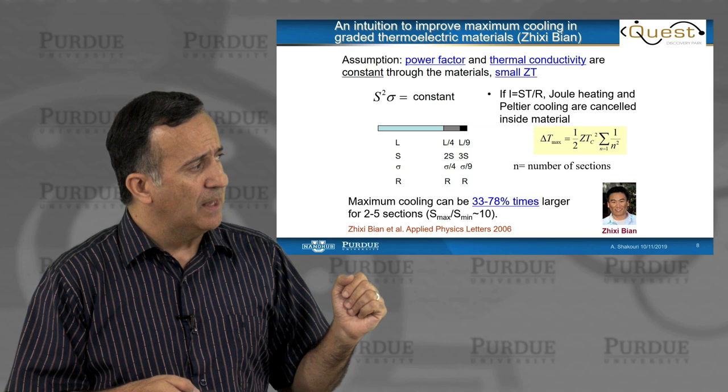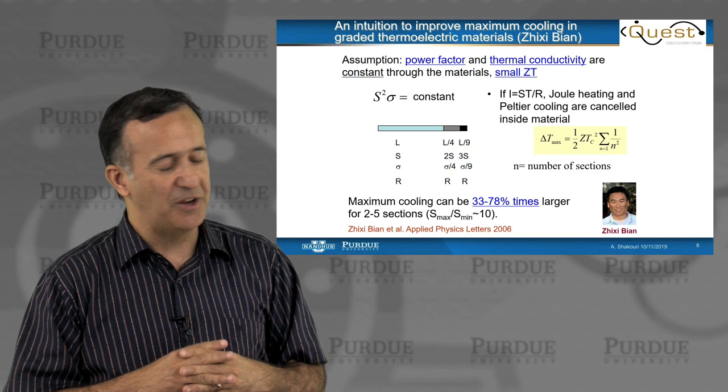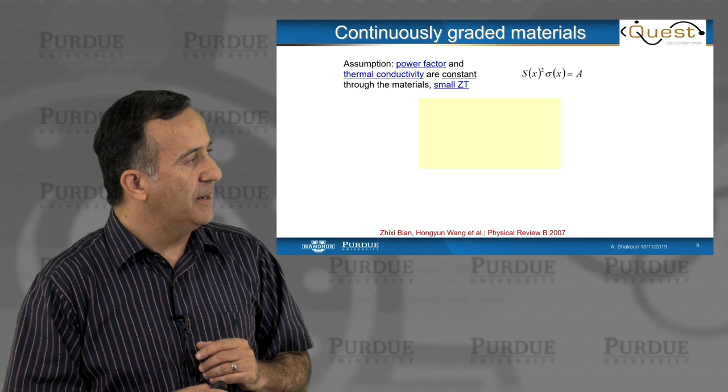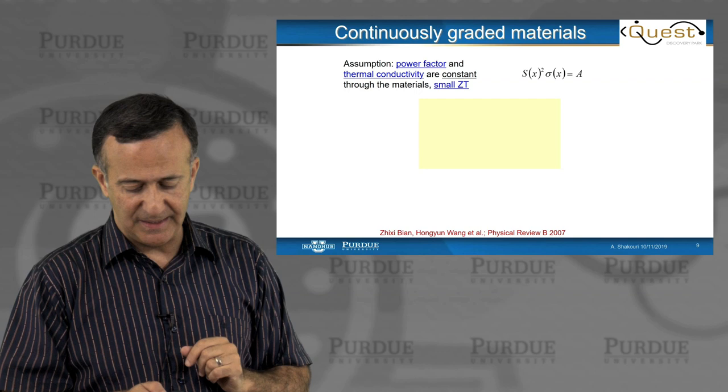This was a toy example. And how he kind of came out with the length of one-fourth, one-ninth, and this, it was just a simple intuition. You know, that sometimes it's good to not know that theorems exist and just play with simple ideas. Later on, Bion looked at it and said, if I do a continuously graded material, but assume S squared sigma is constant, but it changes with distance, what is the delta T max?